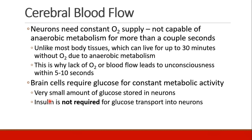Neurons need a constant supply of oxygen. Unlike muscle cells, which can do anaerobic metabolism for up to 30 minutes, neurons can only do anaerobic metabolism for a couple of seconds. This is why lack of oxygen or blood flow to the brain leads to unconsciousness within just a few seconds. Brain cells also require glucose for constant metabolic activity, and very little glucose is stored in neurons — so blood supply is needed to supply glucose. Interestingly, insulin is not required to transport glucose into neurons, which makes them different from most other cells in the body.